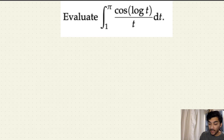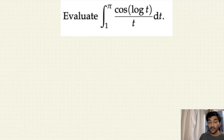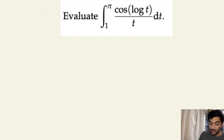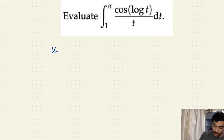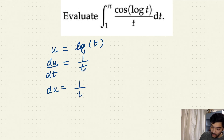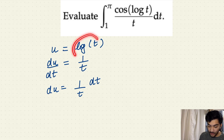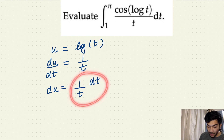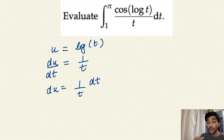Now let's learn how to use substitution. The first step is to identify the function for which you already have the derivative attached in your integral expression. In this case, that function is log(t). So let's suppose u = log(t). When I differentiate u with respect to t, it gives me 1/t. Shifting dt to the other side, du = (1/t)dt. So instead of log(t) I can use u, and instead of (1/t)dt I can use du.